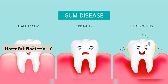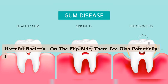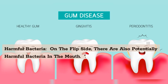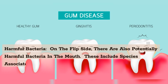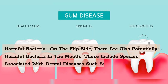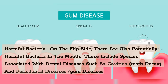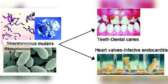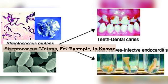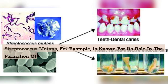On the flip side, there are also potentially harmful bacteria in the mouth. These include species associated with dental diseases such as cavities, tooth decay, and periodontal diseases, or gum diseases. Streptococcus mutans, for example, is known for its role in the formation of dental caries.